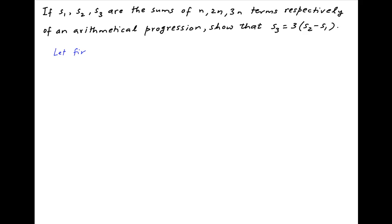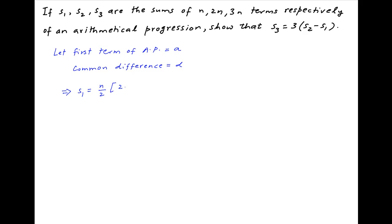Let's assume that the first term of the arithmetical progression is equal to a, and the common difference of this arithmetical progression is equal to d. Therefore, the sum of the first n terms, S1, is equal to n upon 2 times in brackets 2a plus n minus 1 times d.